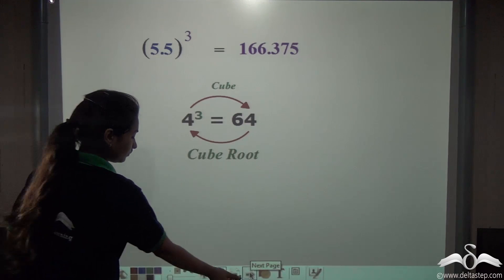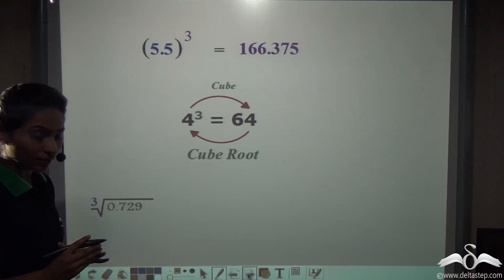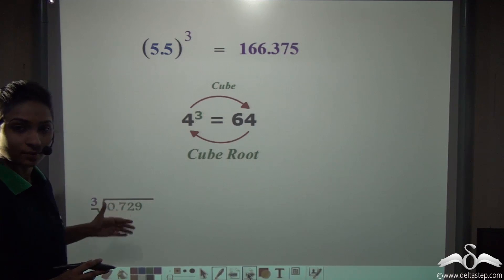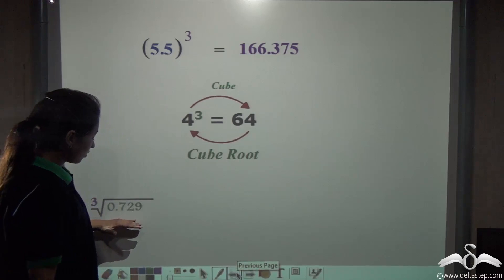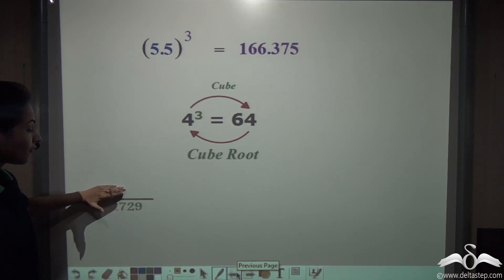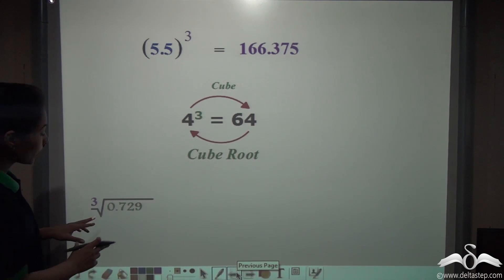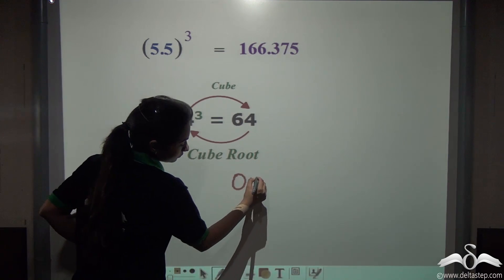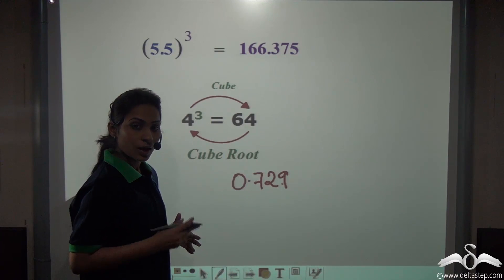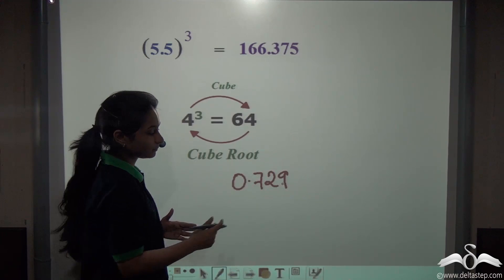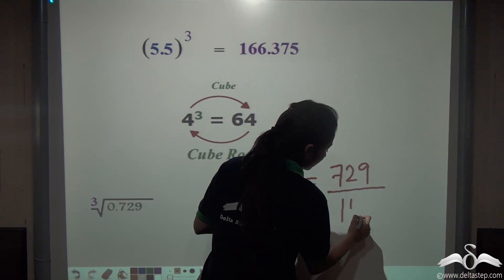Suppose we are given that 0.729 is a cube number and we have to find out the cube root of this number. This is not very simple — you need the method I'm going to teach you. 0.729 is a decimal number but it can also be written as a fraction: 729 by 1000.